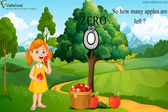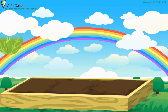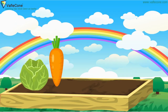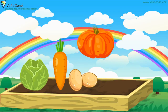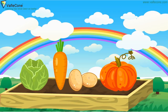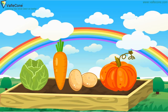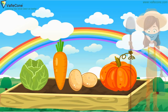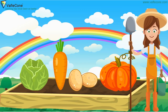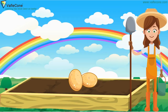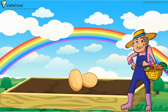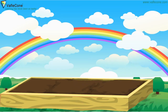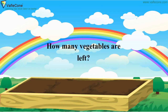Good job. Let's see one more example. How many vegetables are there? One, two, three and four. Four vegetables are there. The first gardener came and she has taken three vegetables. The second gardener came and she has taken one vegetable. Now friends, how many vegetables are left? Zero.